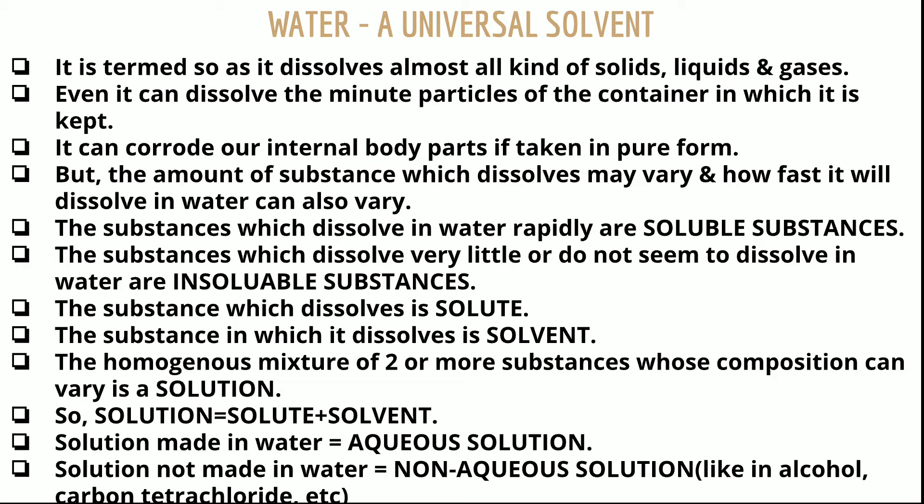The substance which dissolves is called the solute, and the substance in which it dissolves is called the solvent. For example, in a sugar solution, sugar is the solute and water is the solvent. The homogeneous mixture formed with solute and solvent, whose composition may vary, is known as a solution. So: solution = solute + solvent.